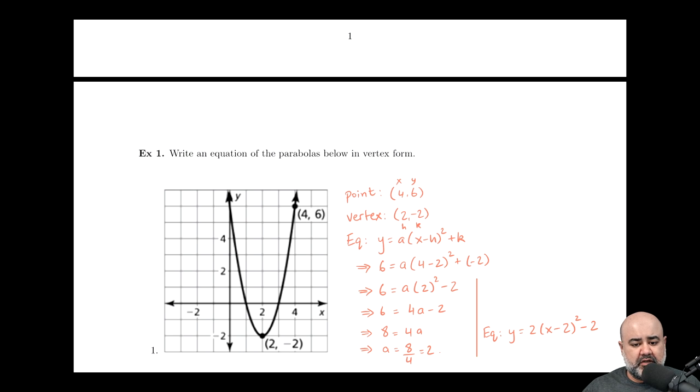So here we have something of the type one problem where we were given a vertex and a point. In this case, we know that the vertex of this parabola is two comma negative two, and we know that the parabola passes through a point four comma six. So I prefer to start by writing my given. So I know that my given point that the curve passes through is four comma six, and I annotate that as x comma y. My vertex based on the graph is two comma negative two. I annotate that as h comma k.